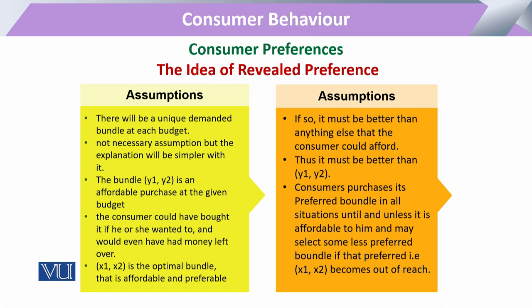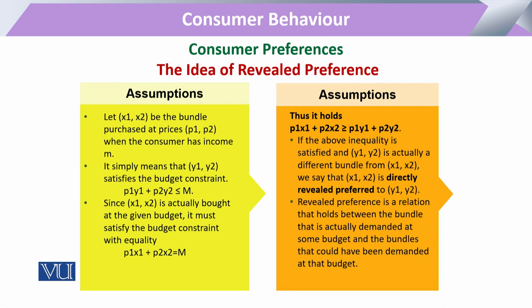Lekin jis bundle ko usne actually khareeda hai, uss ke baare mein hum kahenge ke — chahe chaahte ya na chaahte, kisi bhi form mein — usne apni preference, apni chaahat, apni tarjeeh express kar di hai. Aur wo bundle, wo combination jo usne purchase kiya hai, usko hum kahenge ke yeh uska optimal bundle hai. Is ke liye jo main assumptions hain, woh rule yeh hai ke income line ya income bundle hamesha hamare paas hona chahiye — pehle bundle ki price aur quantity mila ke expenditure income ke barabar ya kam honi chahiye.